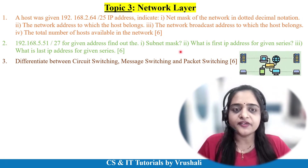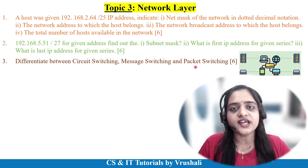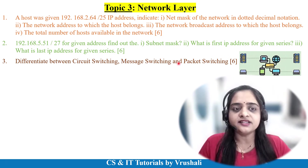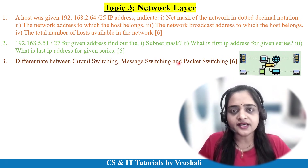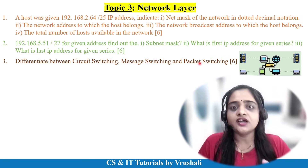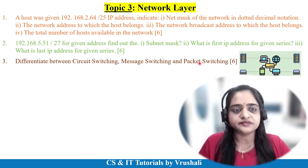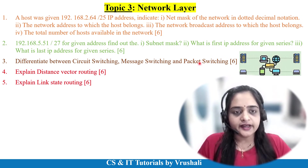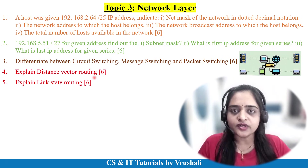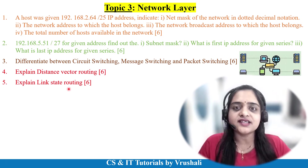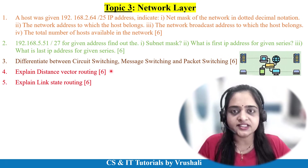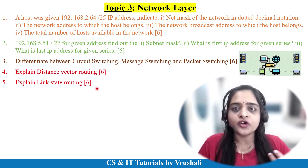The next question is the difference between circuit switching, message switching, and packet switching — explain in tabular format with diagrams for 6 marks, writing 6 to 7 points compulsorily. Questions are also based on routing: either distance vector routing or link state routing explanation for 6 marks — 2 marks for the diagram and 4 marks for the explanation.